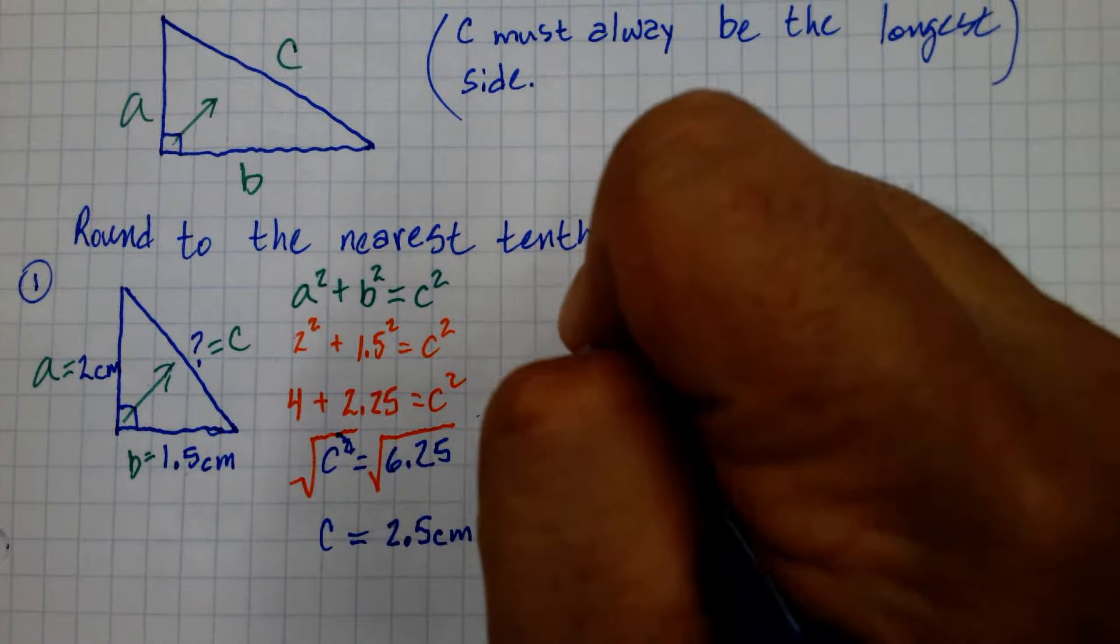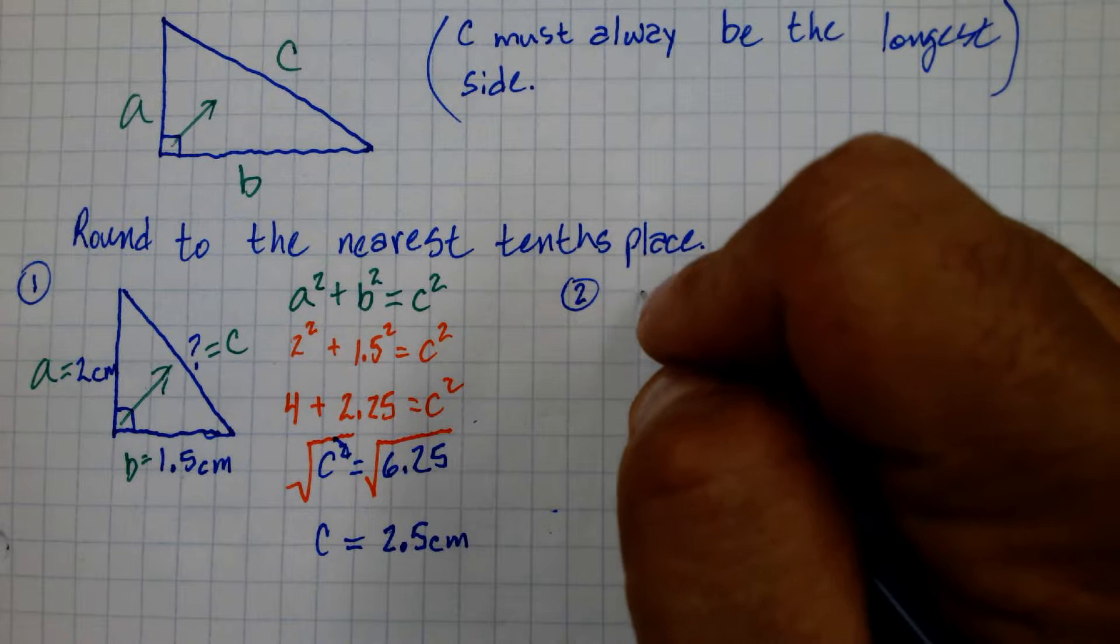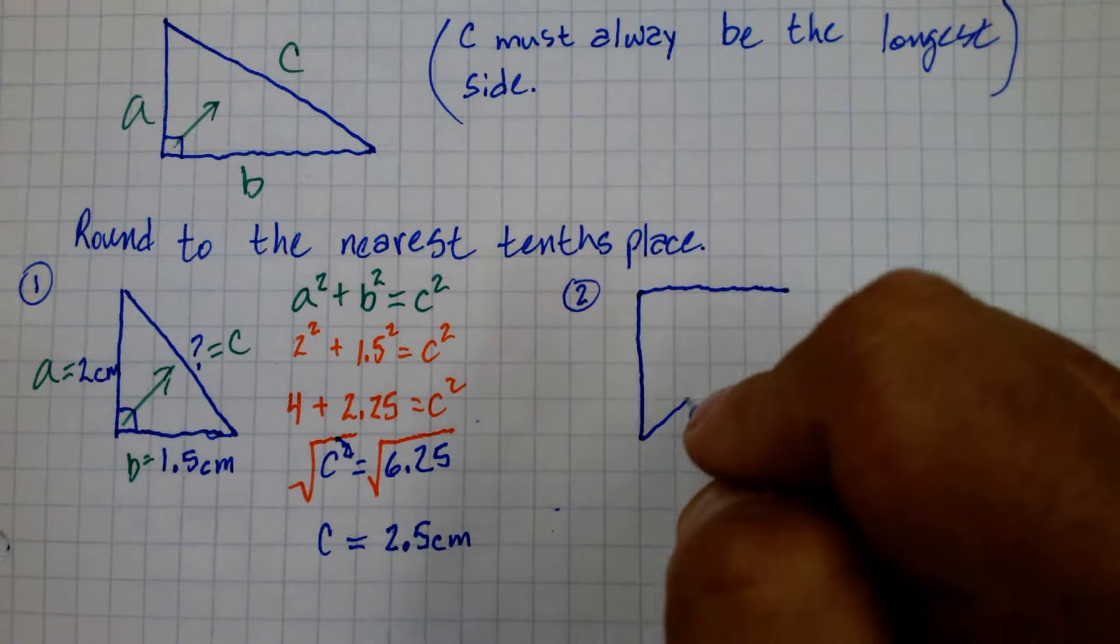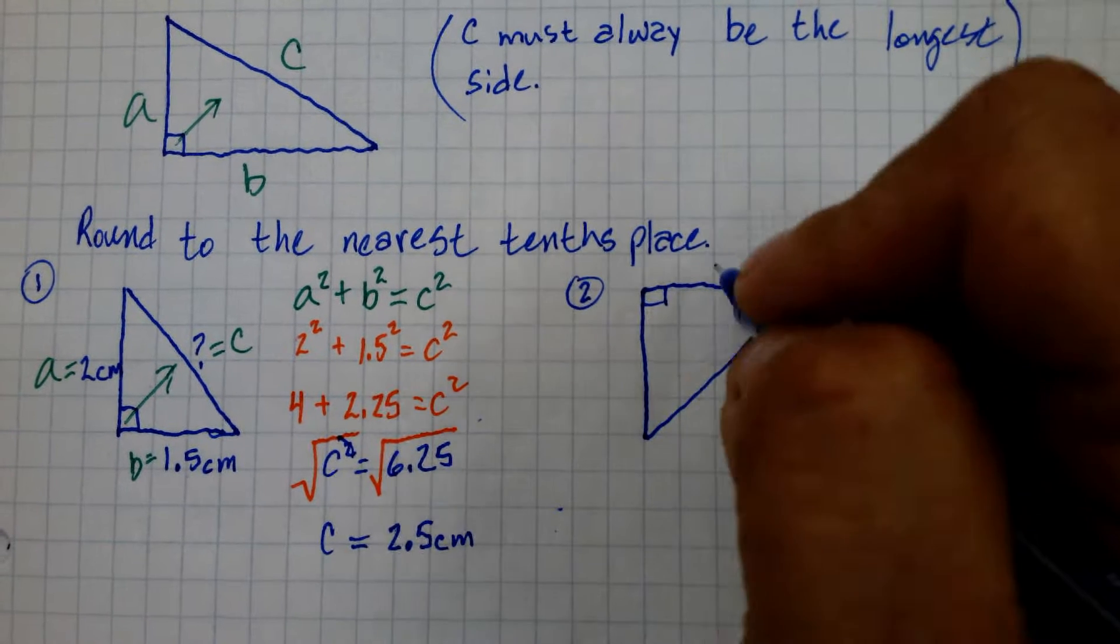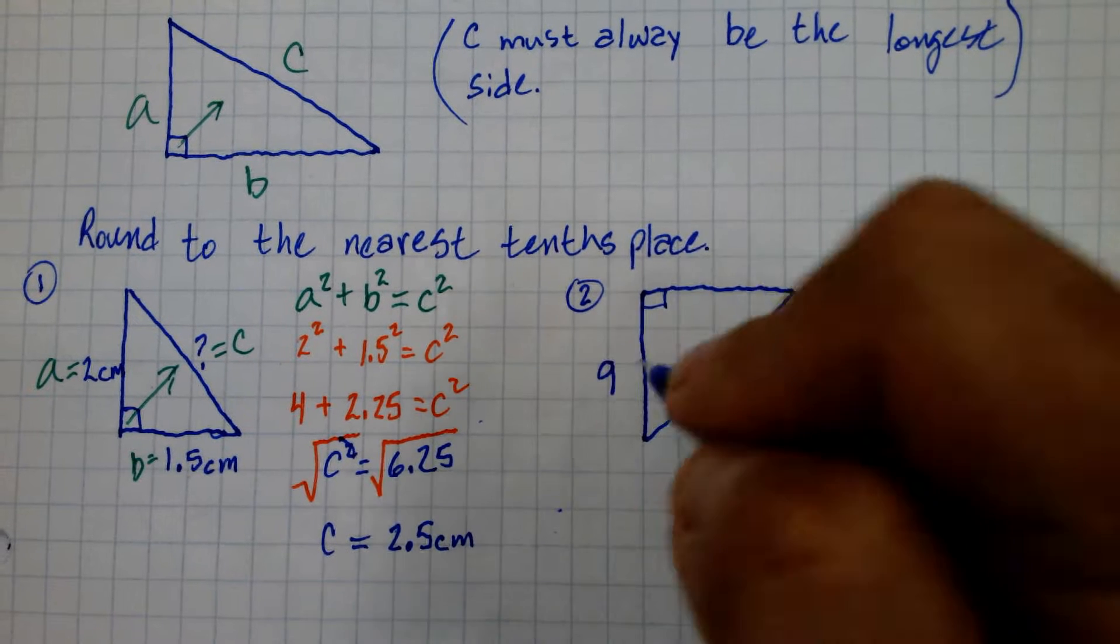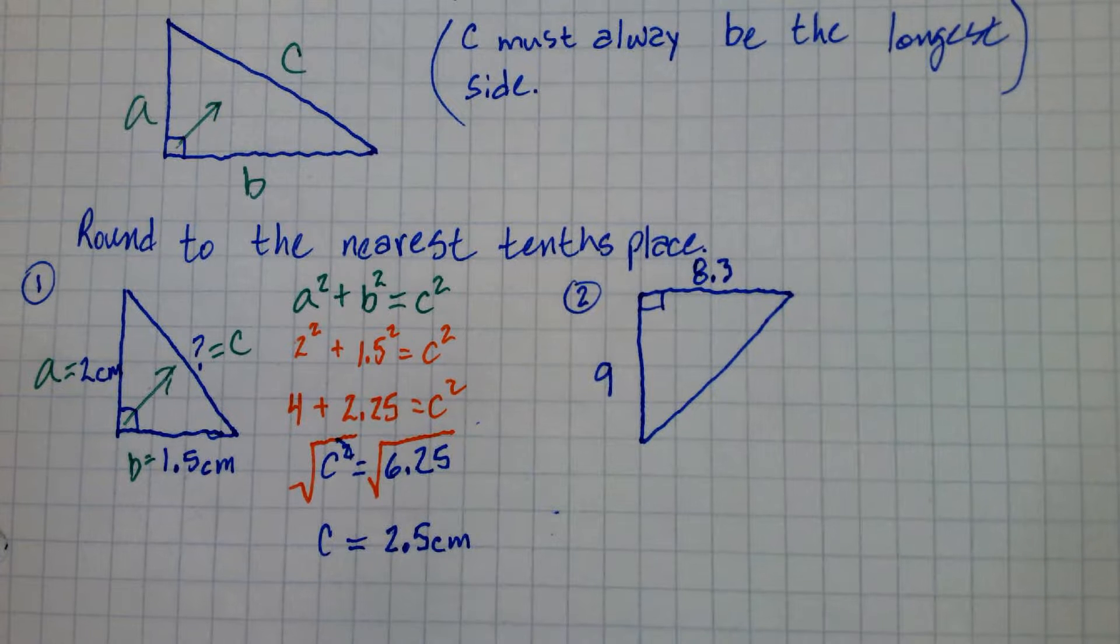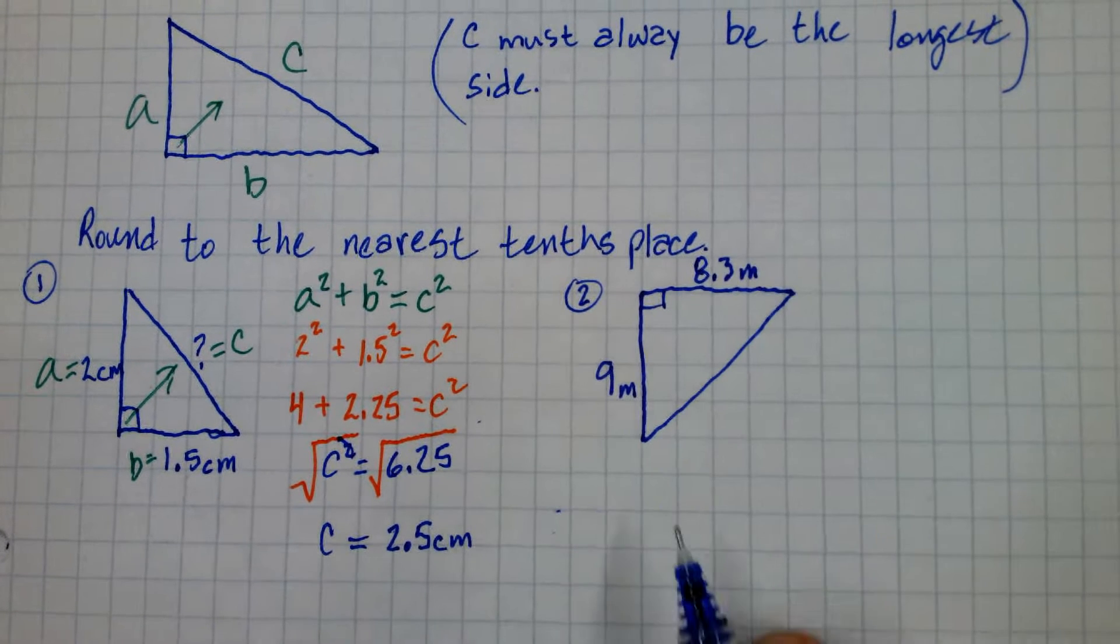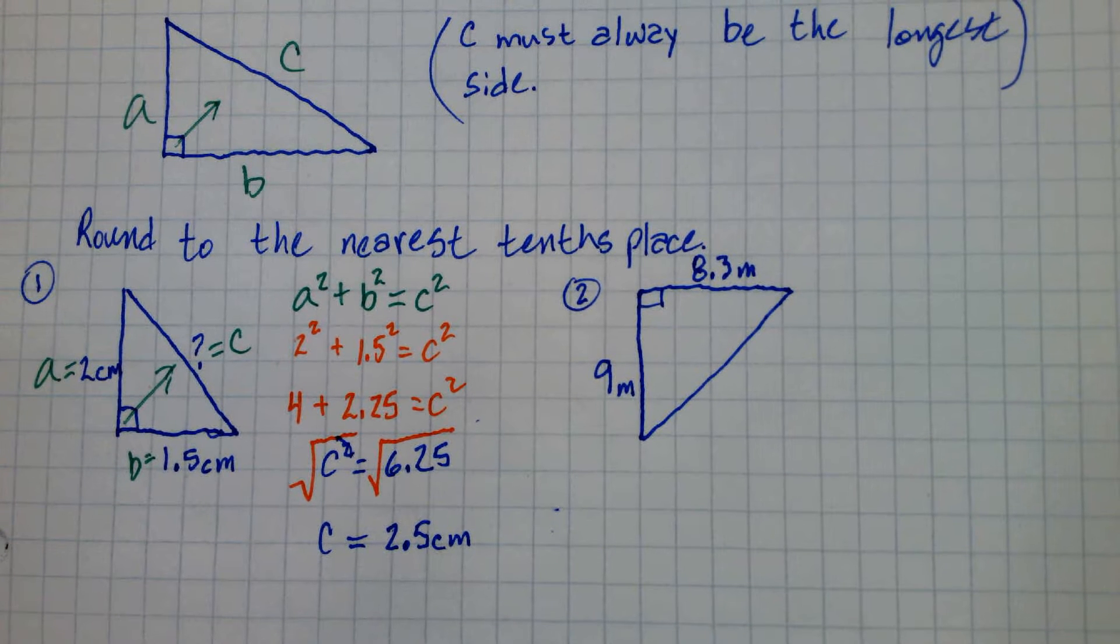Let's do another one. Let's say this is 9 and this is 8.3 meters. We want to know this distance across. 9 meters and 8.3 meters.